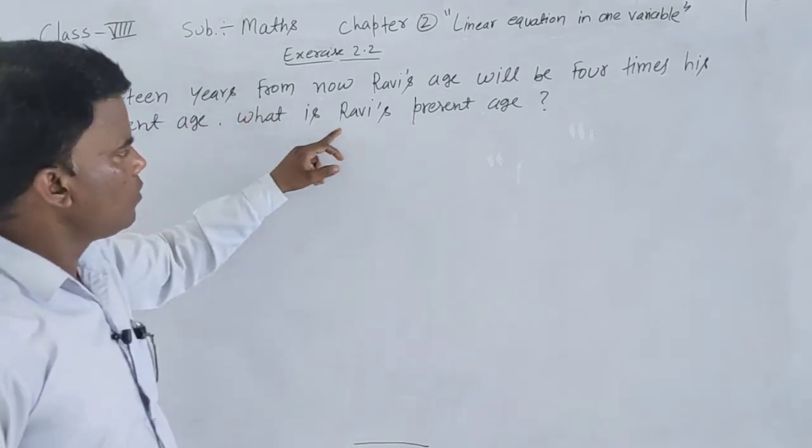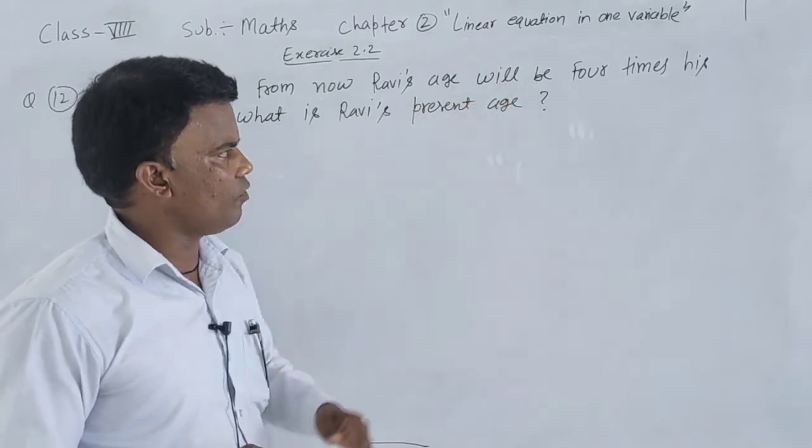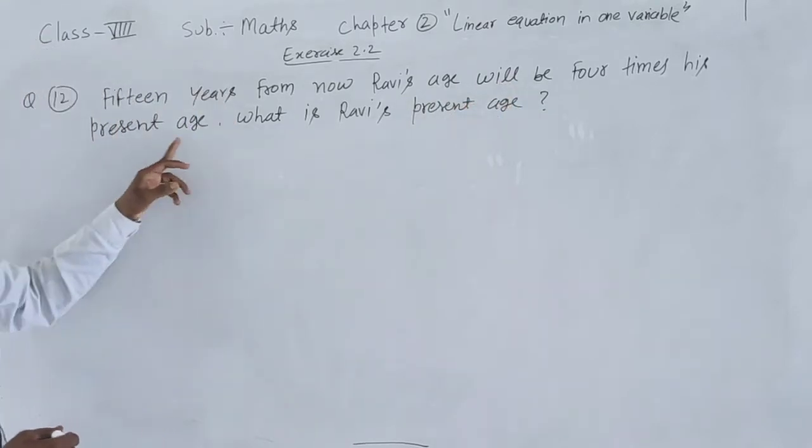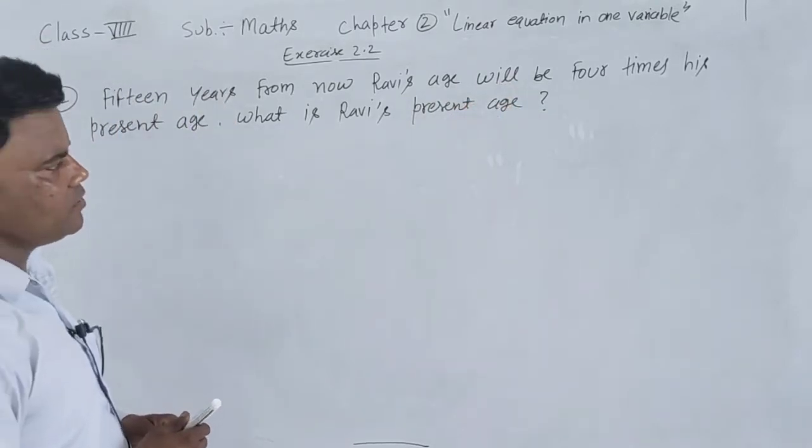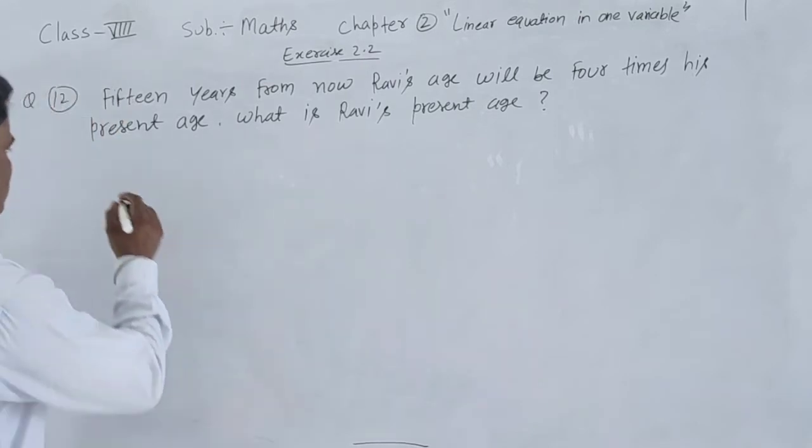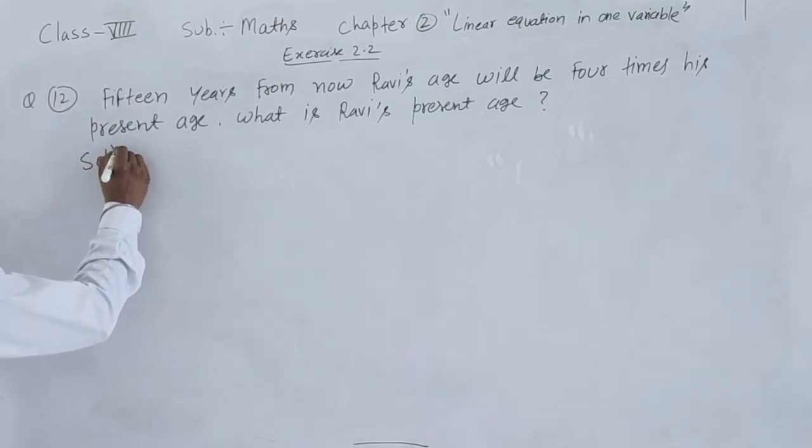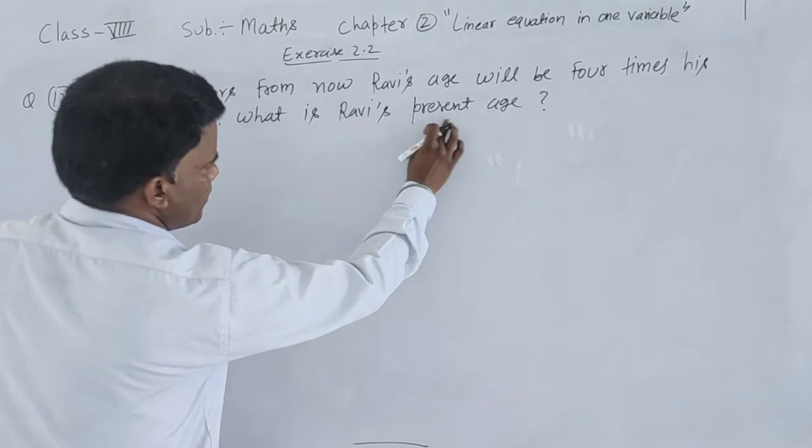15 years from now, Ravi's age will be 4 times his present age. What is Ravi's present age? Let's see the solution. What do we need to find? Ravi's present age.